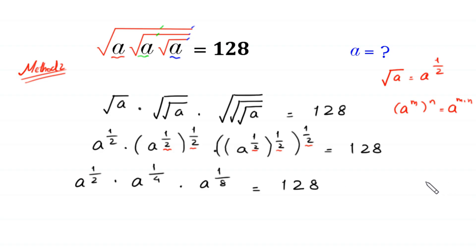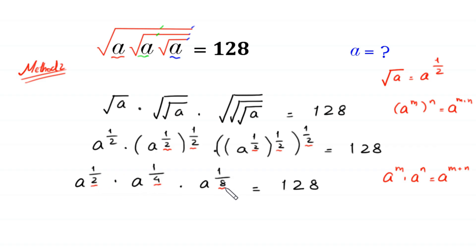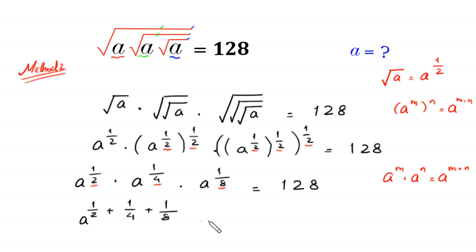Now by using the power rule a^m · a^n = a^(m+n), we add these three powers 1/2, 1/4, and 1/8. We write base a one time and add the powers: a to the power 1/2 plus 1/4 plus 1/8 is equal to 128.